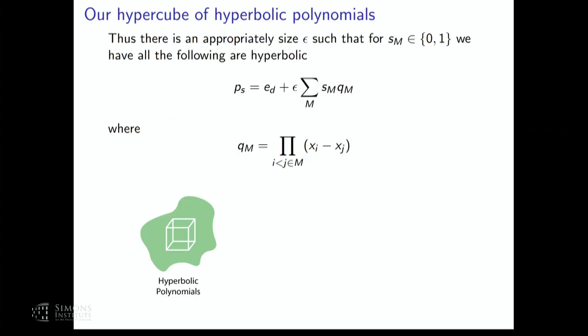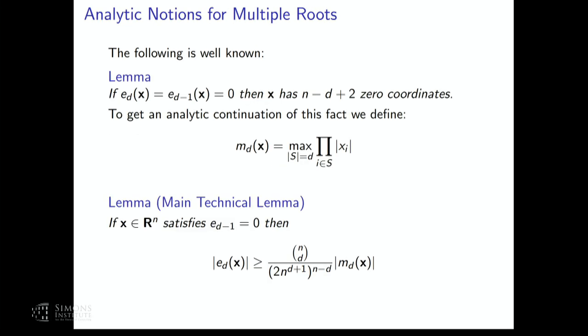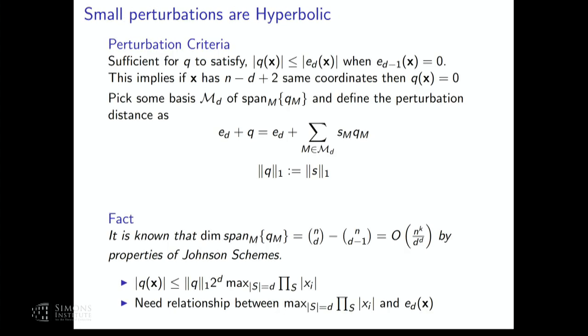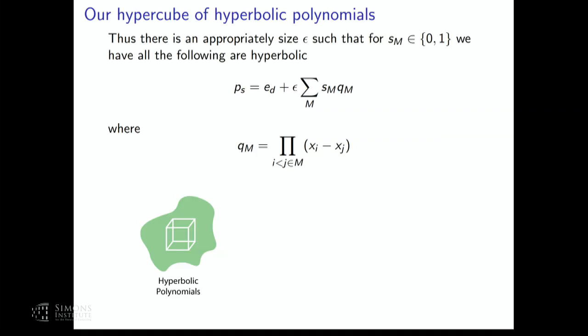By getting this bound — it's exponential, but we're okay with exponential shrinking, just not doubly exponential shrinking — and it satisfies our perturbation criteria. This gives us some idea of the epsilon needed to stay hyperbolic. The main takeaways: we found a subspace of perturbations which is still exponentially sized in dimension, and we've shown that for small enough perturbations we're still hyperbolic. So we construct this hypercube of hyperbolic polynomials — with our basis, we pick a bit string of zeros and ones and add epsilon perturbations in that direction. That's step one, the most technical part.